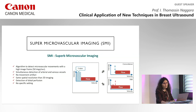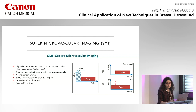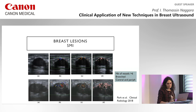The second technique I will discuss is super microvascular imaging (SMI), which is a new algorithm to detect microvascular movement with a high image frame rate. You will have simultaneous detection of arterial and venous vessels with no movement artifacts, the same spatial resolution as 2D imaging, ability to detect distal perfusion, and no specific settings are needed — so it's very easy to use.